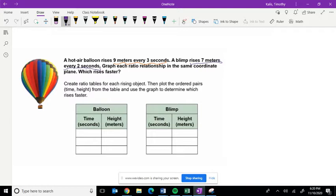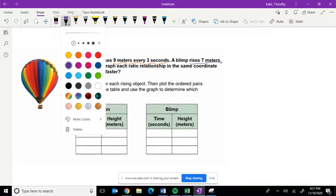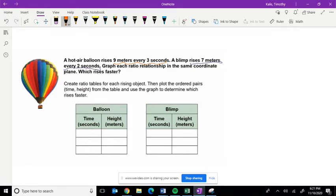We need to graph each relationship in the same coordinate plane and then determine which rises faster. So we first have to create ratio tables for each object, the hot air balloon and the blimp. And we have to plot those ordered pairs, the time being on the x-axis, the height being on the y-axis from the table, and then use the graph to help us determine which one rises faster.